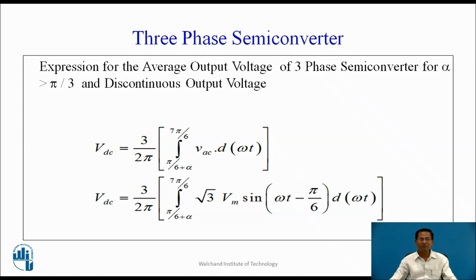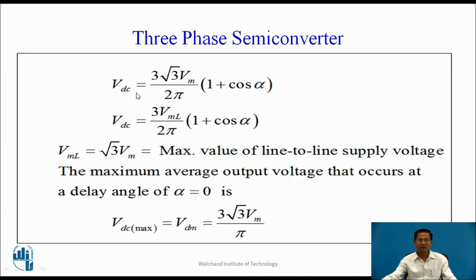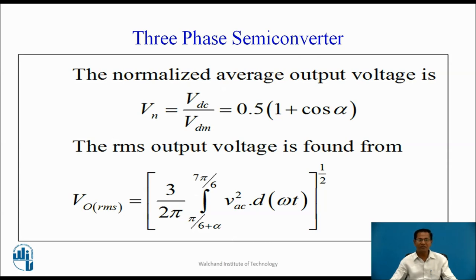Expression for the average output voltage of the three-phase semi-converter for α > π/3 (discontinuous conduction mode): Vdc = (3/2π) ∫(π/6+α to 7π/6) Vdc d(ωt), where Vdc = √3 Vm sin(ωt − π/6). After solving, we obtain Vdc = (3√3 Vm / 2π)(1 + cos α), or Vdc = (3 Vml / 2π)(1 + cos α), where Vml = √3 Vm is the maximum value of the line-to-line supply voltage. The maximum average output voltage at α = 0° is Vdm = 3√3 Vm / π. The normalized average output voltage is Vn = Vdc/Vdm = 0.5 × (1 + cos α).